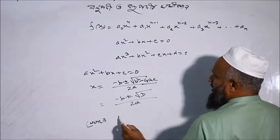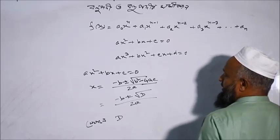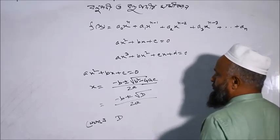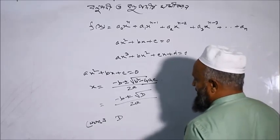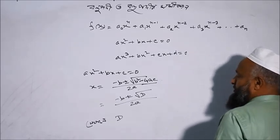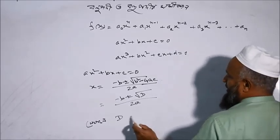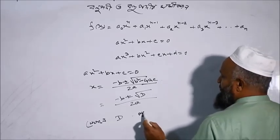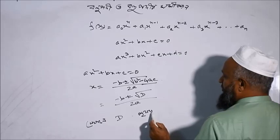Here the English term is 'discriminant'. Its first occurrence — discriminant — in Bangla means prithayog (positive) or nishayog (negative).